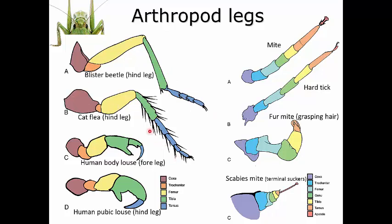Compare that to the hind leg of the cat flea. In this case, you have a much larger, more robust coxa region and a reduced trochanter. The femur is shorter but much fatter. These areas help store and provide energy for the really big jumps that fleas do. The tibia is a little shorter and the tarsus is elongate with many segments, allowing for grasping onto things.